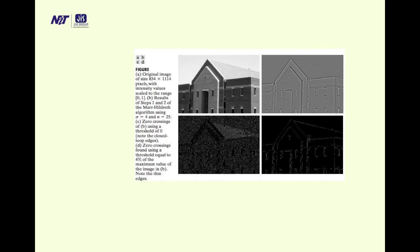The original picture A is 834×1114 pixels. The result shows: step 1 and step 2 — first derivative then second derivative — of the Laplacian of Gaussian (Marr-Hildreth algorithm) using σ = 4 and n = 25. Zero crossing of B uses a threshold of 0. Figure C is without any threshold. Figure D is with 4% thresholding. As the threshold is applied, the picture details emerge and edges become more prominent.